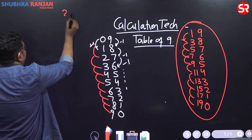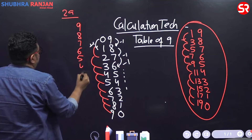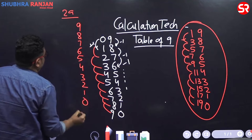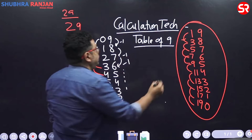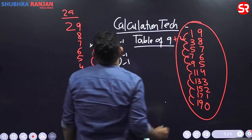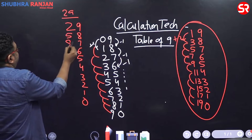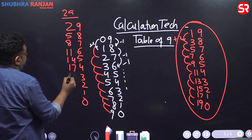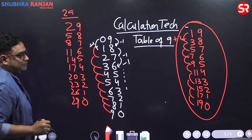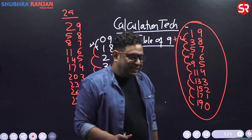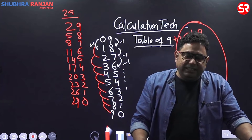Table of 29: again 9, 8, 7, 6, 5, 4, 3, 2, 1, 0. Start with 2 on the other side. Table of 9 was plus 1, table of 19 was plus 2, so table of 29 would be plus 3: 2, 5, plus 3 is 8, plus 3 is 11, 14, 17, 20, 23, 26, 29. From today onwards, tables ending with 9 can be easily sorted out.